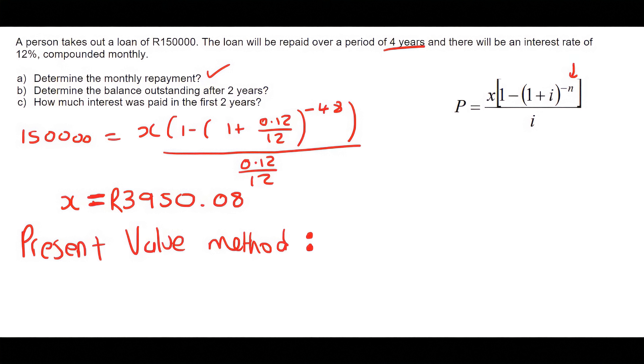In this question, we've got a four-year question, and they want to know the balance outstanding after two years. So that means there are still two years that are coming up. So we will use two years for the place of N. That's going to give us 3,950.08.